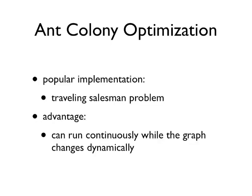Ant Colony Optimization algorithms have been applied to many combinatorial optimization problems, ranging from quadratic assignment to vehicle routing. Many derived methods have been adapted to dynamic problems in real variables, stochastic problems, multi-target and parallel implementations. It has also been used to produce near-optimal solutions to the traveling salesman problem. ACO algorithms have an advantage over simulated annealing and genetic algorithm approaches on similar problems when the graph may change dynamically. The ant colony algorithm can be run continuously and adapt to changes in real-time, which is of interest in network routing and urban transportation systems.